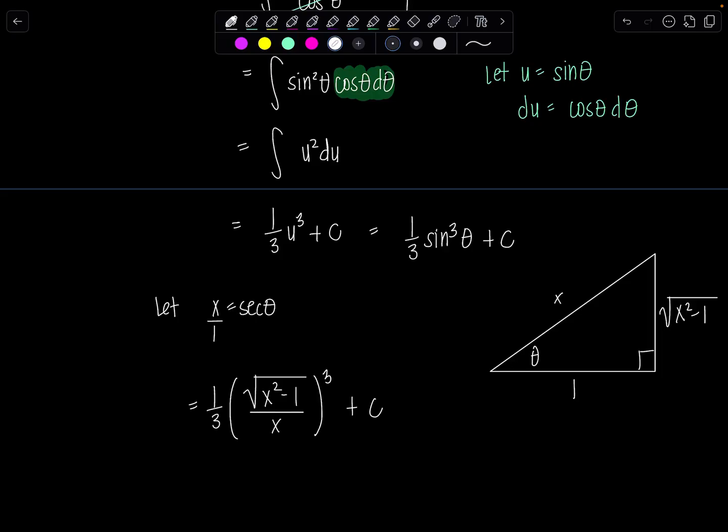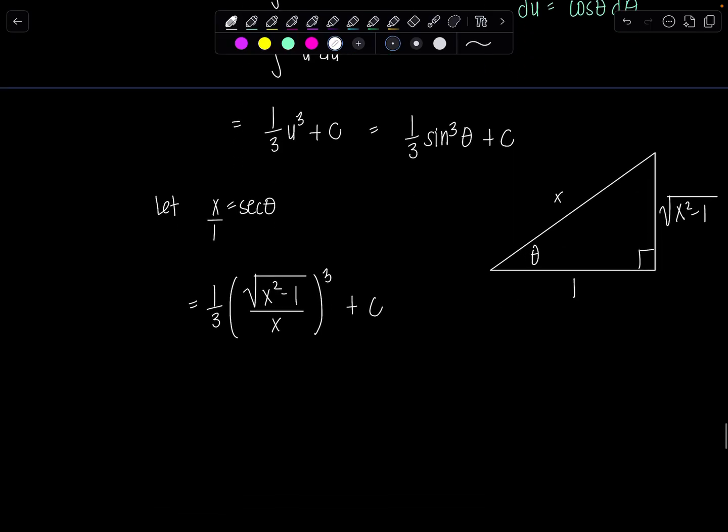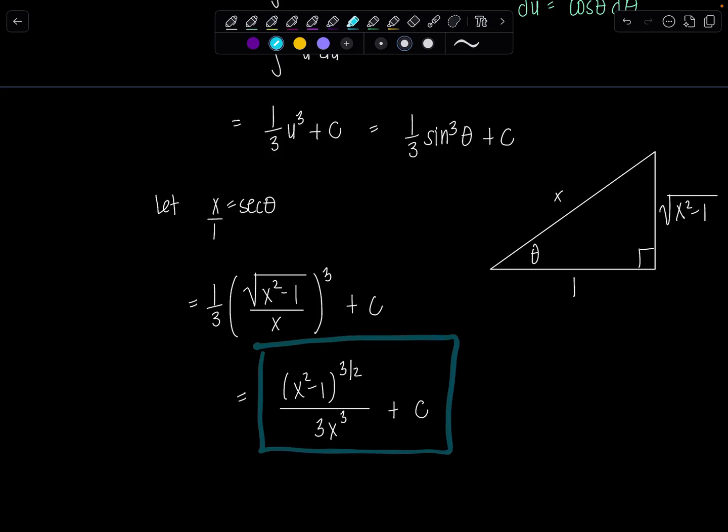And then to clean it up what would you do? I would probably write the numerator as x squared minus one to the three halves instead. And then put this like three down here with an x cubed plus c. I think that's the snazziest way to write your answer. But always check with your instructor if they have a preference. You know make them happy. Get the points. Get the grades you want.